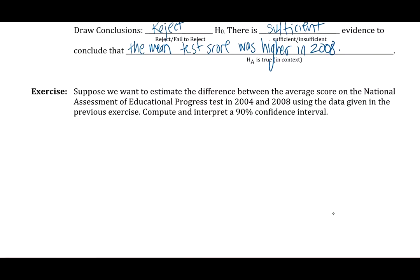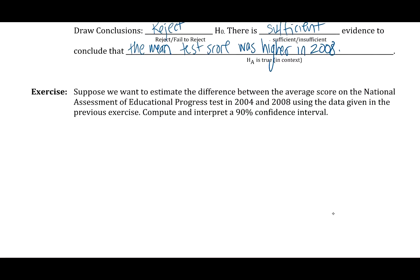The second part asks us to look at a confidence level. Suppose we want to estimate what is that difference between the average score on the National Assessment of Educational Progress test in 2004 and in 2008 using the data given in our previous exercise. We're trying to make an estimate comparing 2008 values to 2004 values, and we want to write a 90% confidence interval.